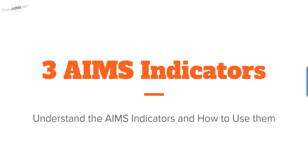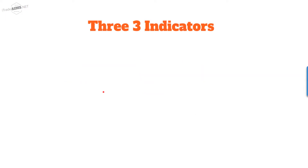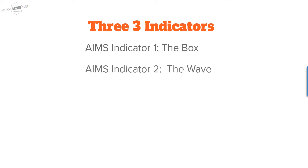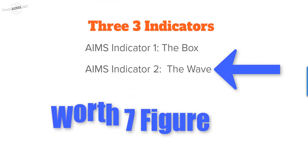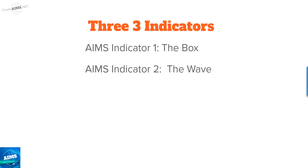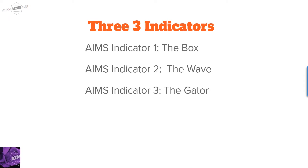In this presentation my focus is going to be to understand the AIMS indicators and how to use them. We have three indicators. Indicator number one is the Box. Indicator number two is AIMS Wave — I put the Box at the top because it was the first one I coded and the most valuable to me, but the second most valuable indicator is the Wave. The third AIMS indicator is the Gator, and together all three create a setup.